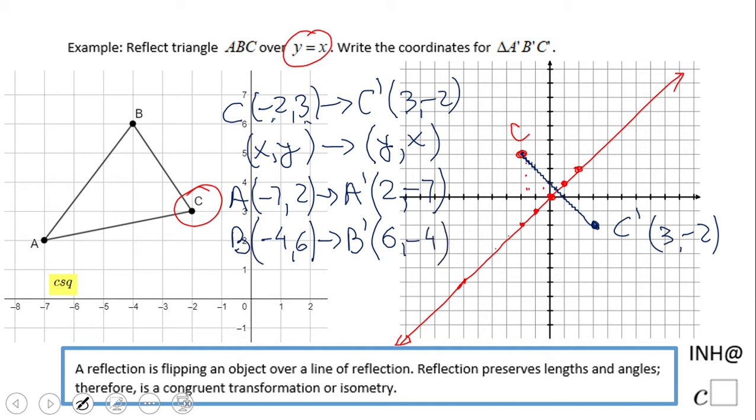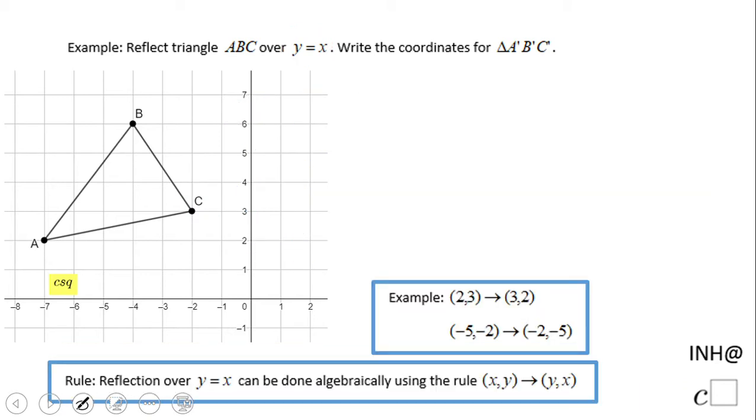And if you want to plot those guys, you can get a nice picture. That is the rule that you might want to remember when you do a reflection over Y equals X. If you do not remember, do one point, get the rule, and move on.